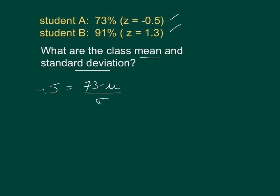The other student had a z-score of 1.3, and that student's actual score was 91. We would subtract the mean and divide by the standard deviation. So what we have here are two equations, two unknowns. Two equations and two unknowns we can solve to figure out our two variables.